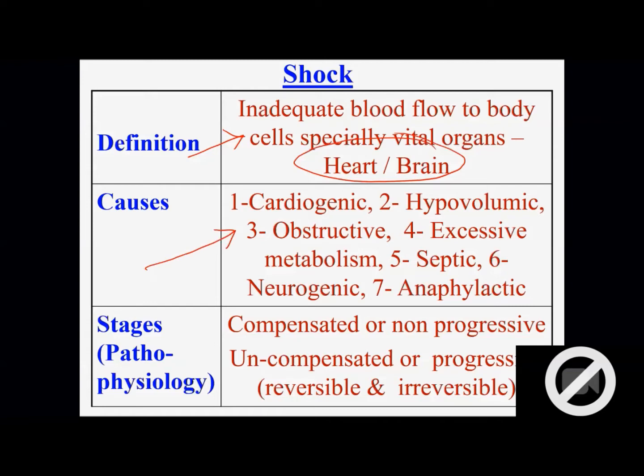And then we are having these seven causes: cardiogenic, hypovolemic, obstructive, excessive metabolism, septic, neurogenic and anaphylaxis. Stages you mainly have to remember this year. Compensated or non-progressive shock - negative feedback mechanism is dominating and not allowing shock to progress.